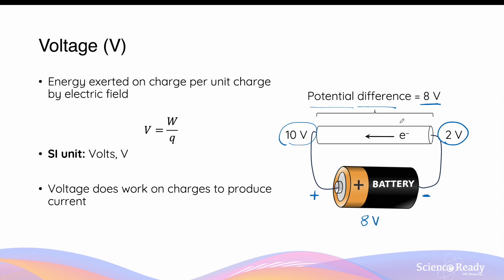This difference in potential acts as an electric field that causes the charges — namely the electrons — in the conductor to move. These electrons will move towards the positive terminal, the side with higher potential, flowing from the 2 volt potential towards the 10 volt potential. Recall that conventional current flows the other way: from the higher potential of 10 volts towards the lower potential of 2 volts.